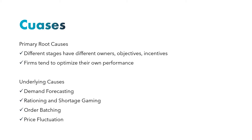The first one is the primary cause and the second is the underlying cause. Primary causes are due to different stages having different ownership and different policies. For an effective supply chain, all stages should have a common policy, but this is an ideal case because each one wants more profit in a short period of time. Underlying causes consist of demand forecasting, rationing and shortage gaming, order batching, and price fluctuation.